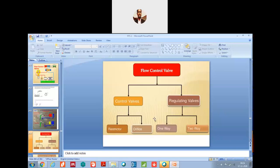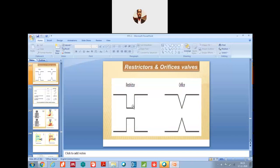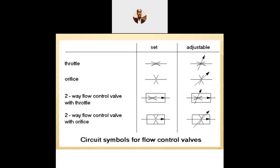How are flow control valves classified? They are classified into control valves and regulating valves. Control valves are of the restrictor type and orifice type. Regulating valves are classified into one-way and two-way types. A restrictor will have a plain flow profile whereas an orifice type will have notches or sections. In graphical representation, a throttle is set and indicated with a fixed symbol; if it is adjustable, it is shown with a cross arrow. Orifice is always denoted with a V-shape. An adjustable two-way flow control valve with orifice is represented as shown.